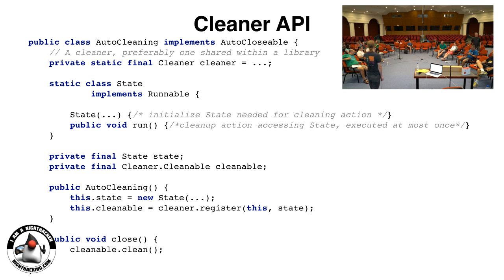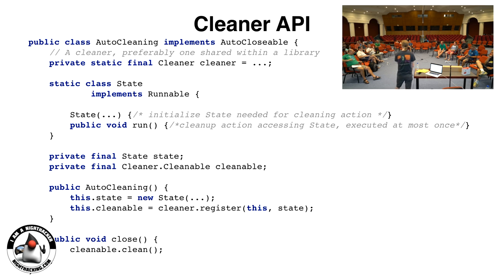The Azul Collector would happily do full GCs and run all finalizers multiple times a second. But most people weren't actually prepared to have an object that was hit by a weak reference get collected on the next clock cycle. The Azul Collector could do that, and a lot of code just broke because they were planning on the object being around for a little while. There's no requirement in the spec for it to be around — it could get collected the clock cycle after.